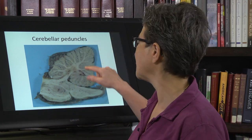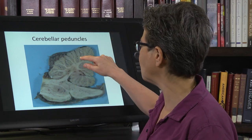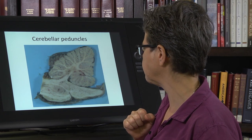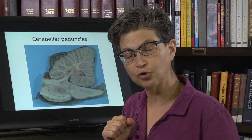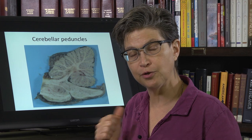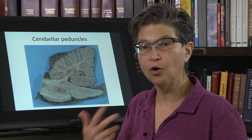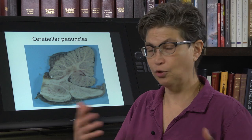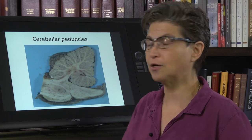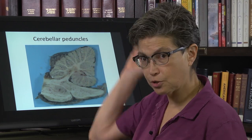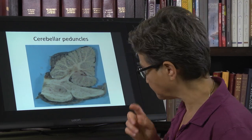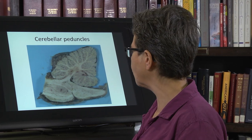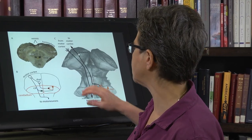The cerebellar cortex is an important cortex and is where a lot of motor learning takes place. So if you go out and try to play a new instrument, play a new sport, ride a bike, or juggle — things you haven't done before — you'll be using your cerebellum.